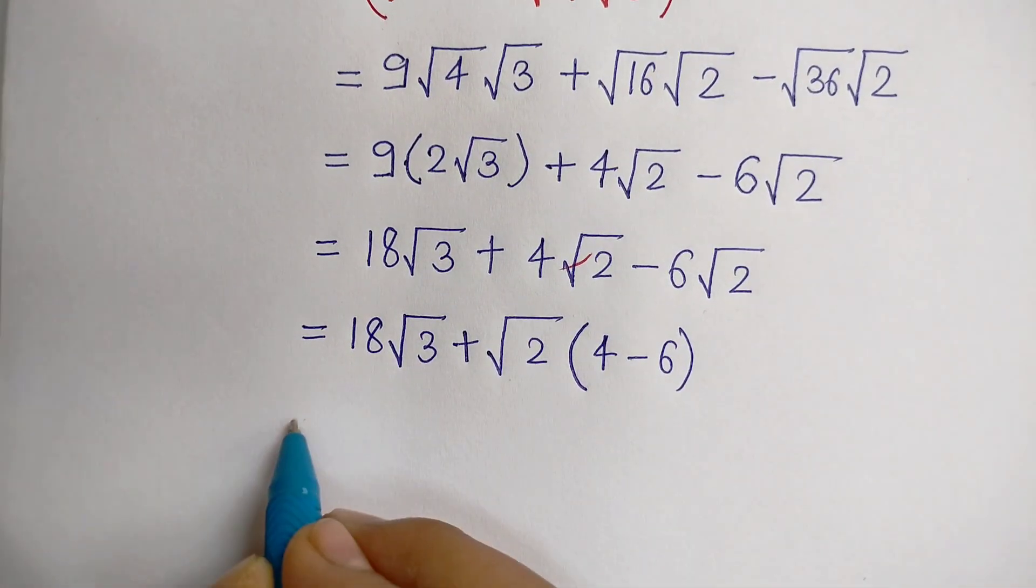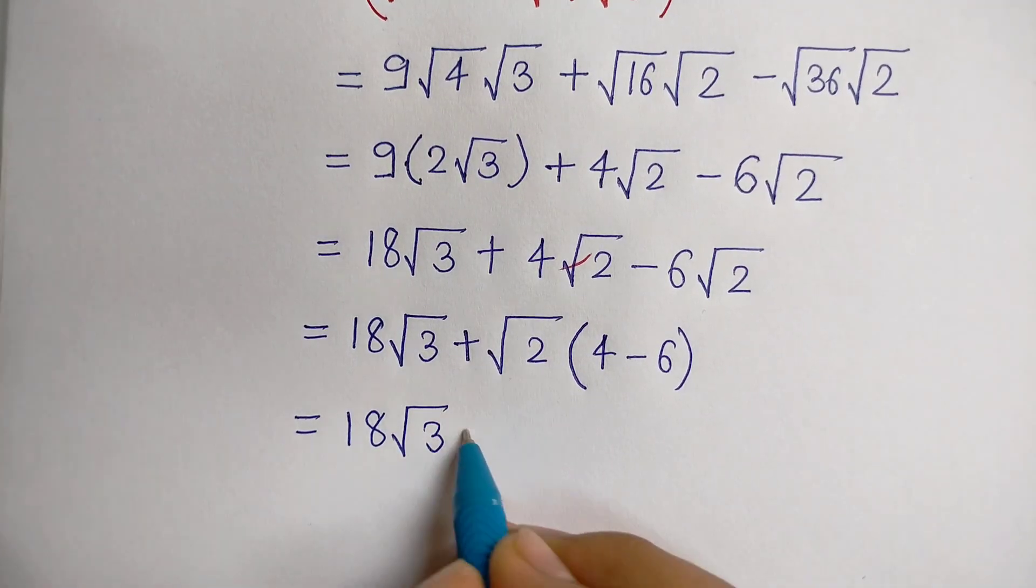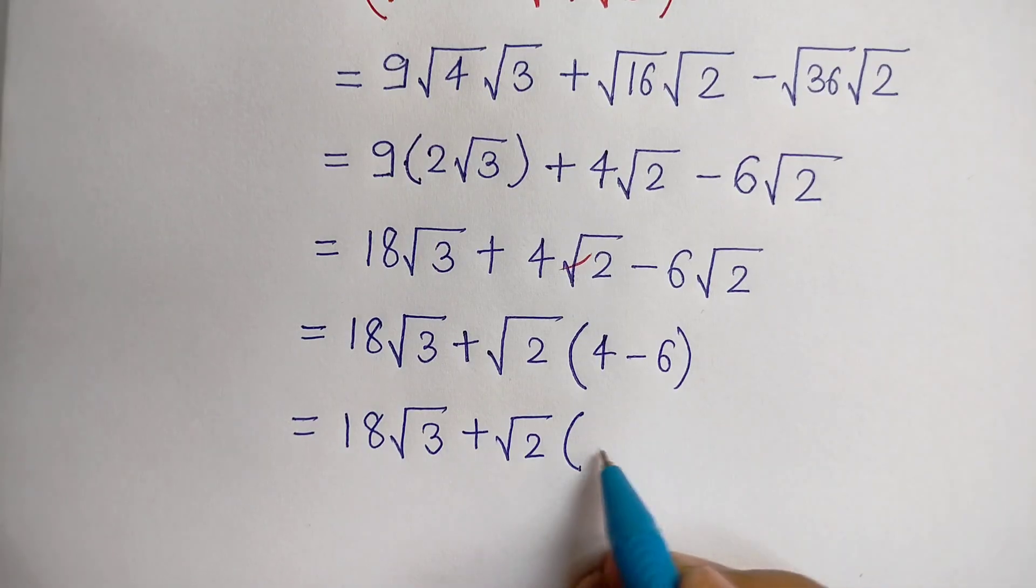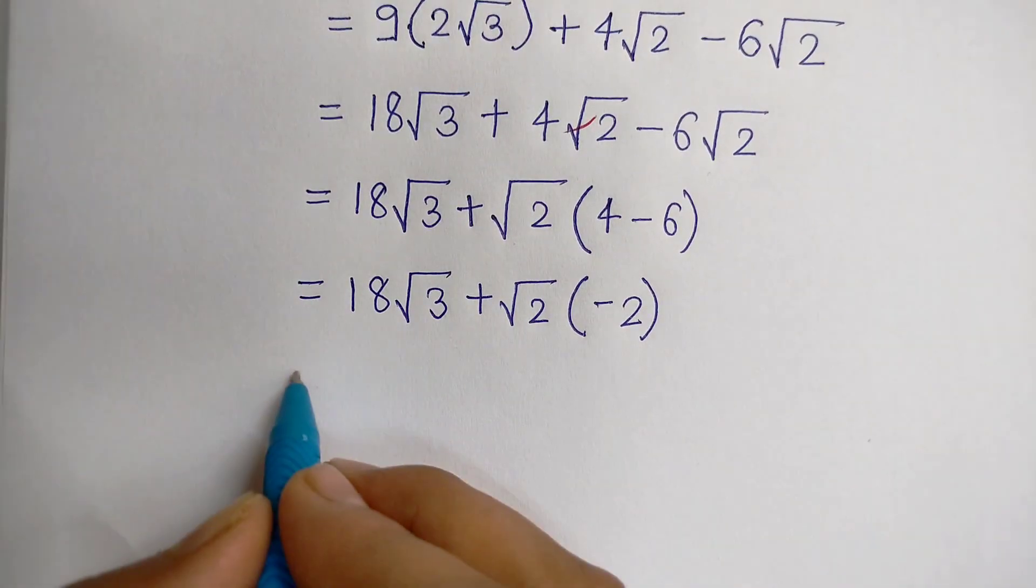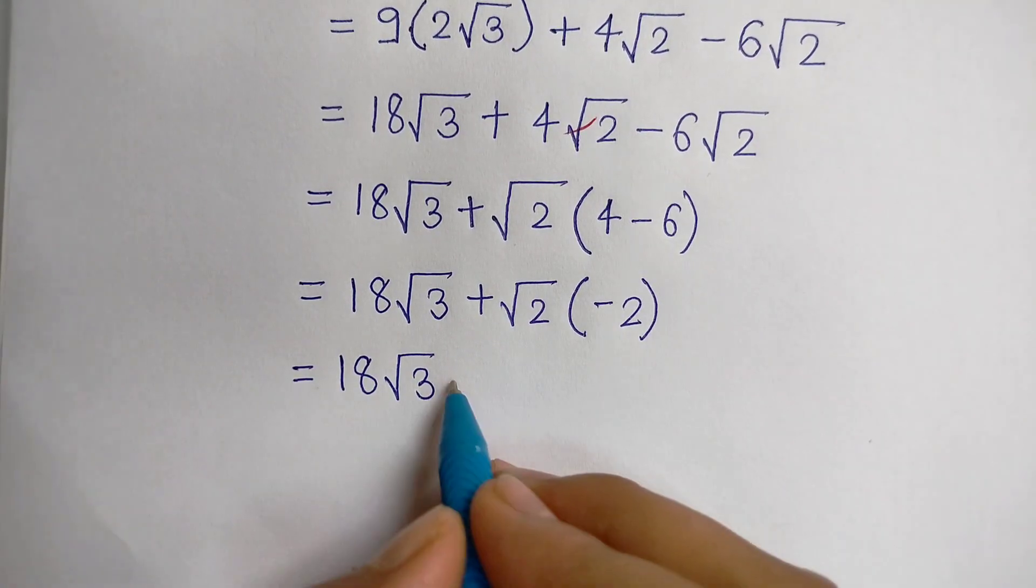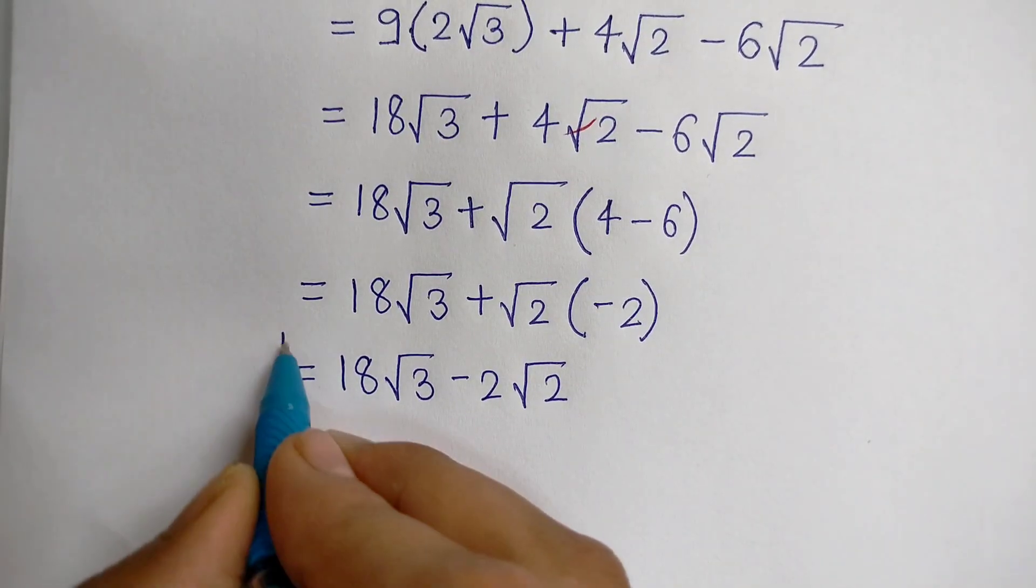In the next step, 18√3 + √2, where 4-6 is -2. Now this can be written as 18√3 - 2√2, and this is our final answer.